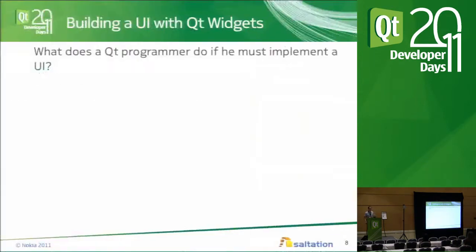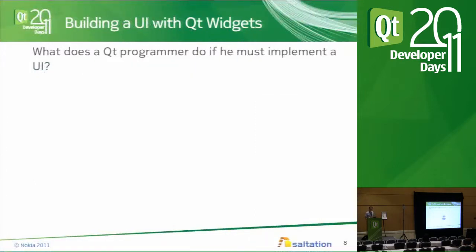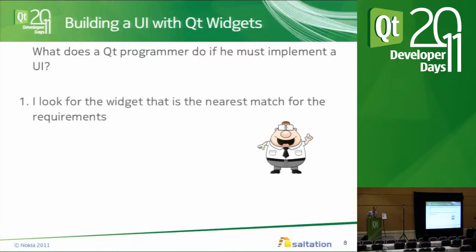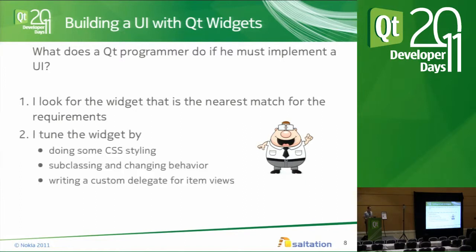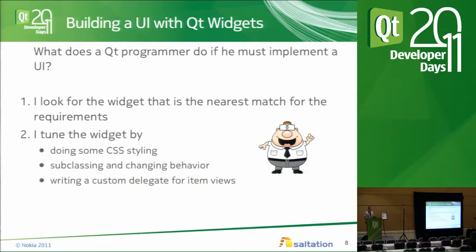So you all know what a Qt programmer does when implementing a user interface with Qt widgets. The first thing he does is look for the widget that is the nearest match for what he wants. Then he starts tuning the widget. In Qt 4, we have the possibility to use CSS for some tuning, we can subclass a widget and change some of its behavior, and for item views, we can write custom delegates. This is the toolset we have in Qt 4 for easy user interface customization.